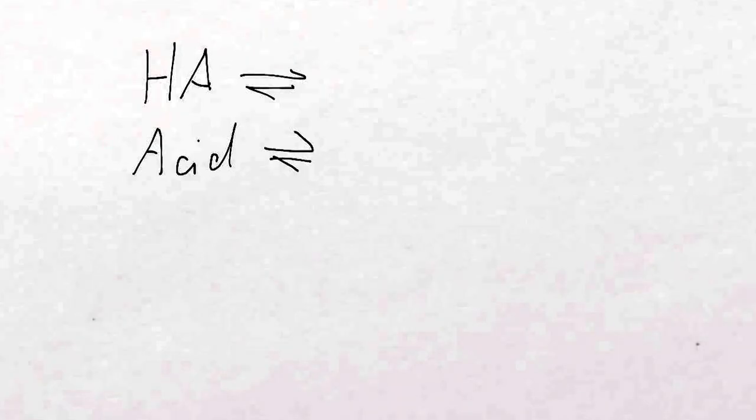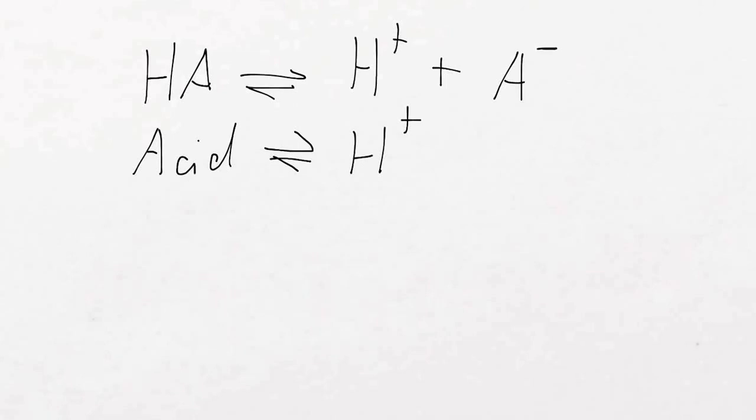So let's say we have HA and this guy is in equilibrium and obviously this is an acid. And what does an acid do? Gives off a proton, exactly. So proton. And what's left of the acid then? A minus, you are absolutely right. And we could classify this A minus as what? It would be the conjugate base, exactly.